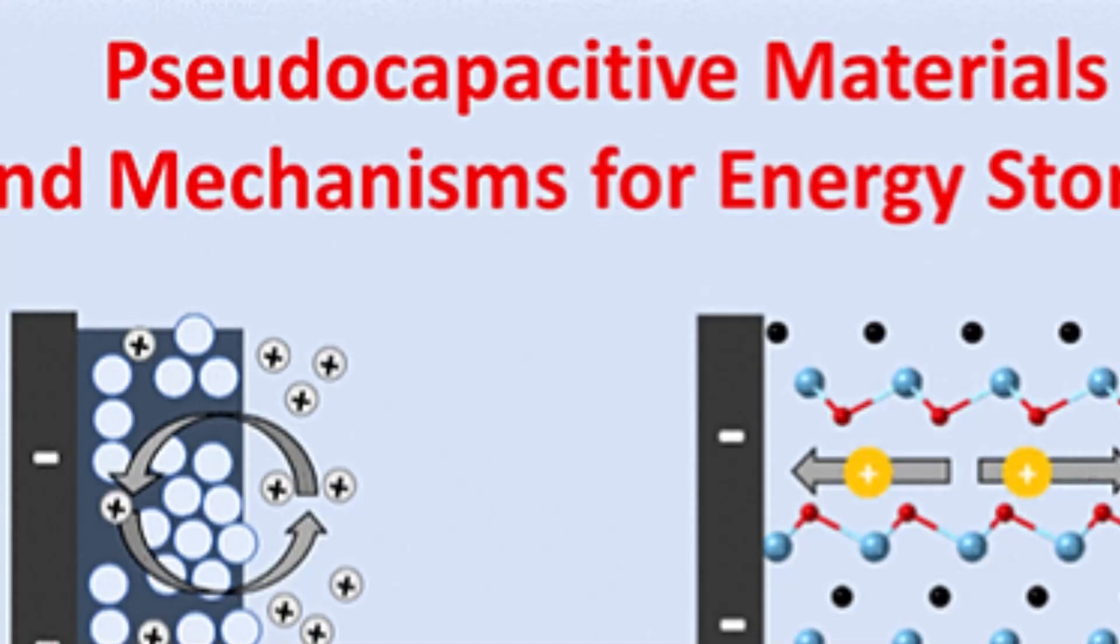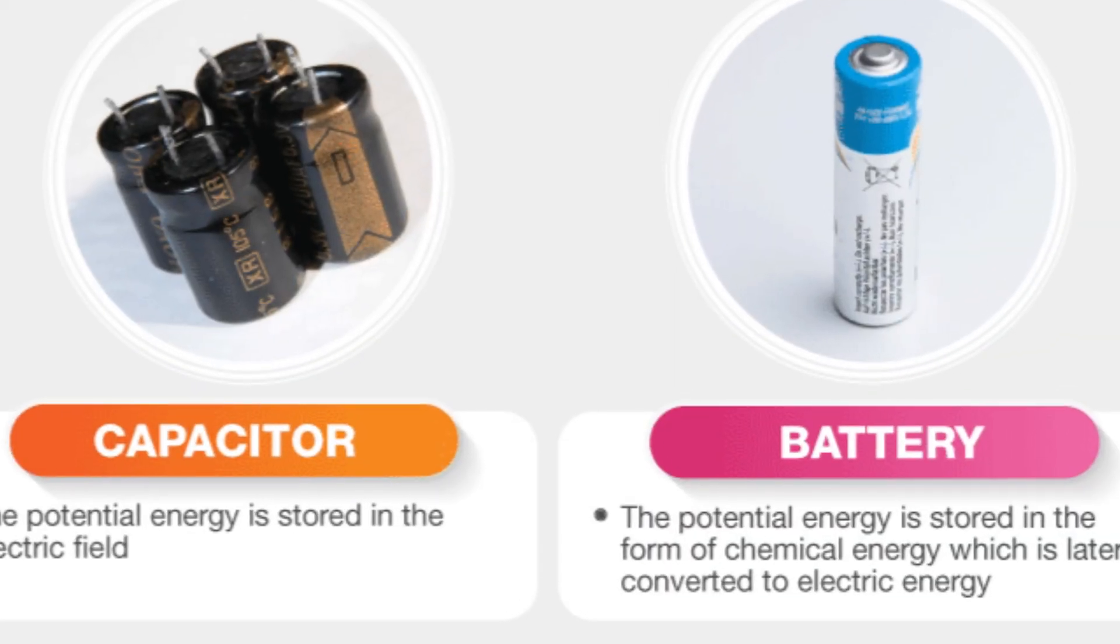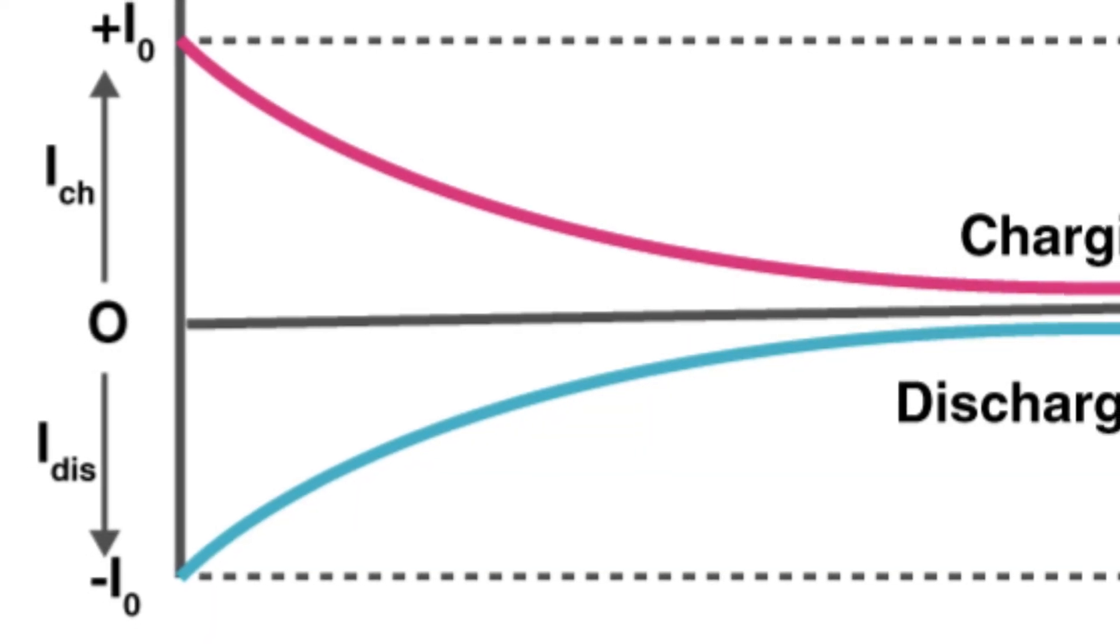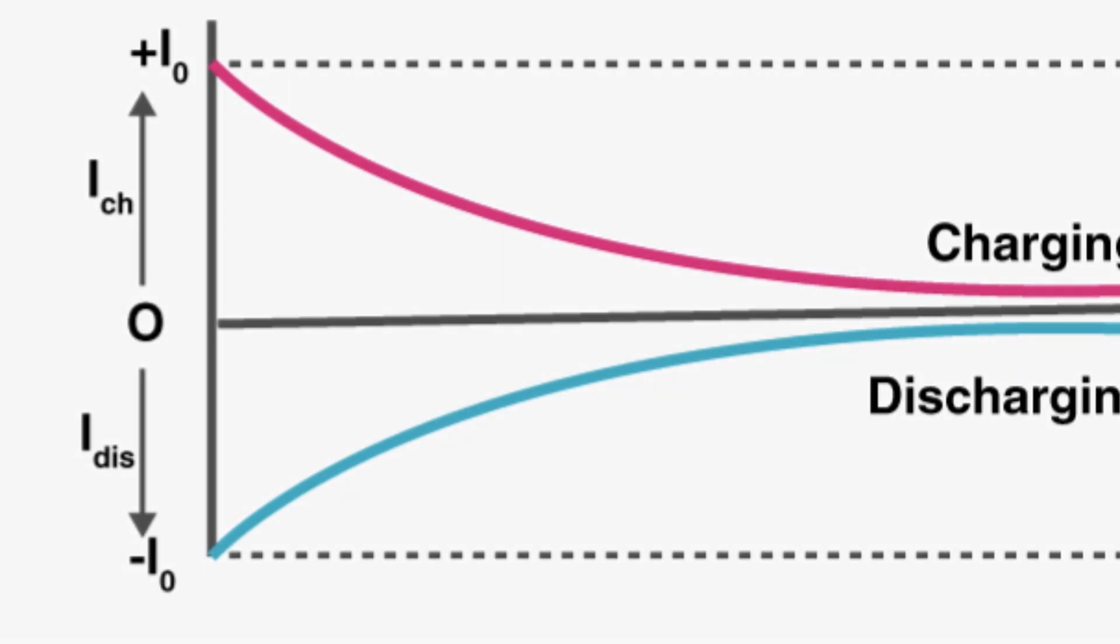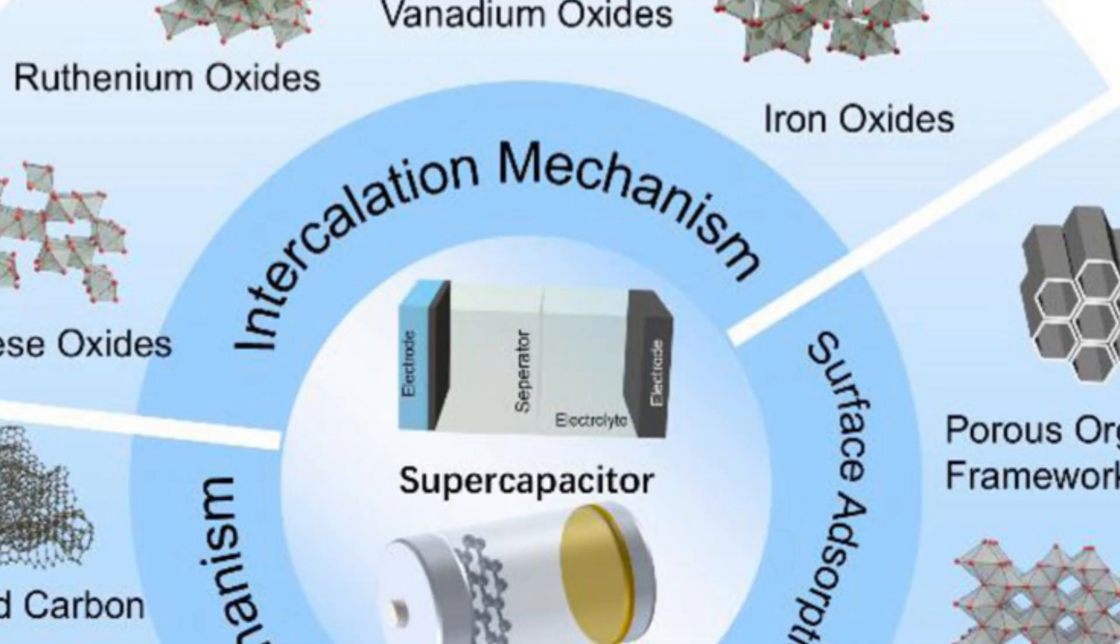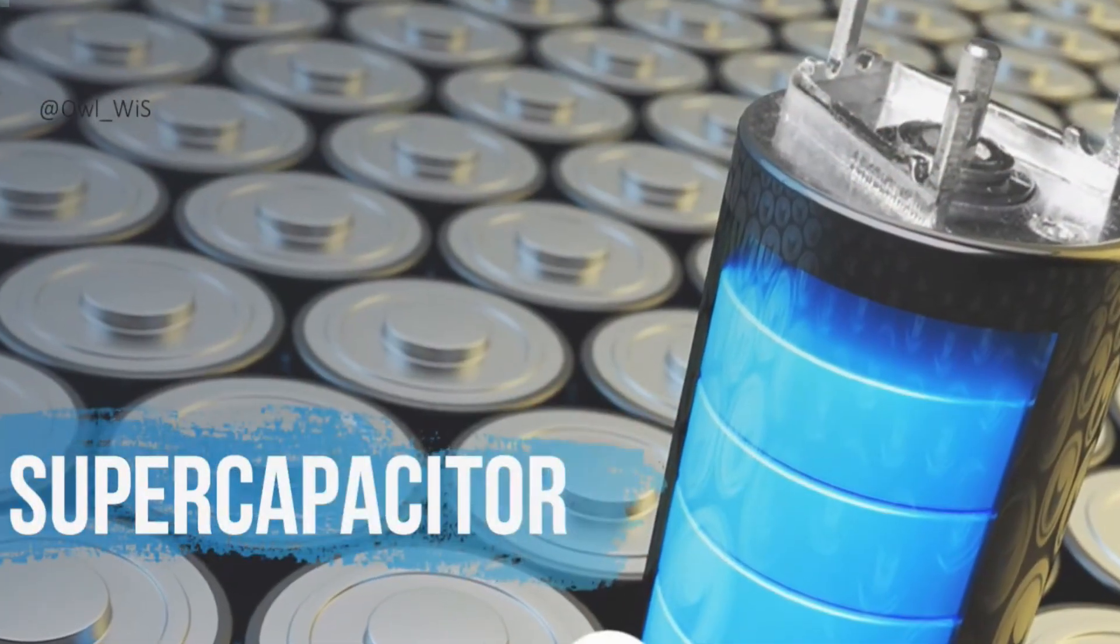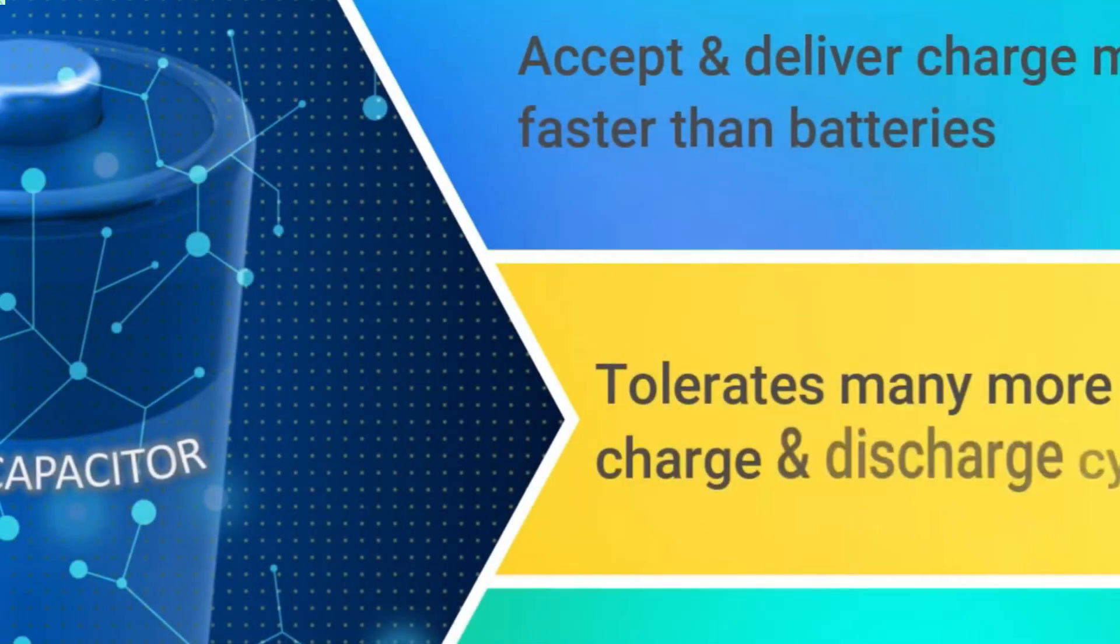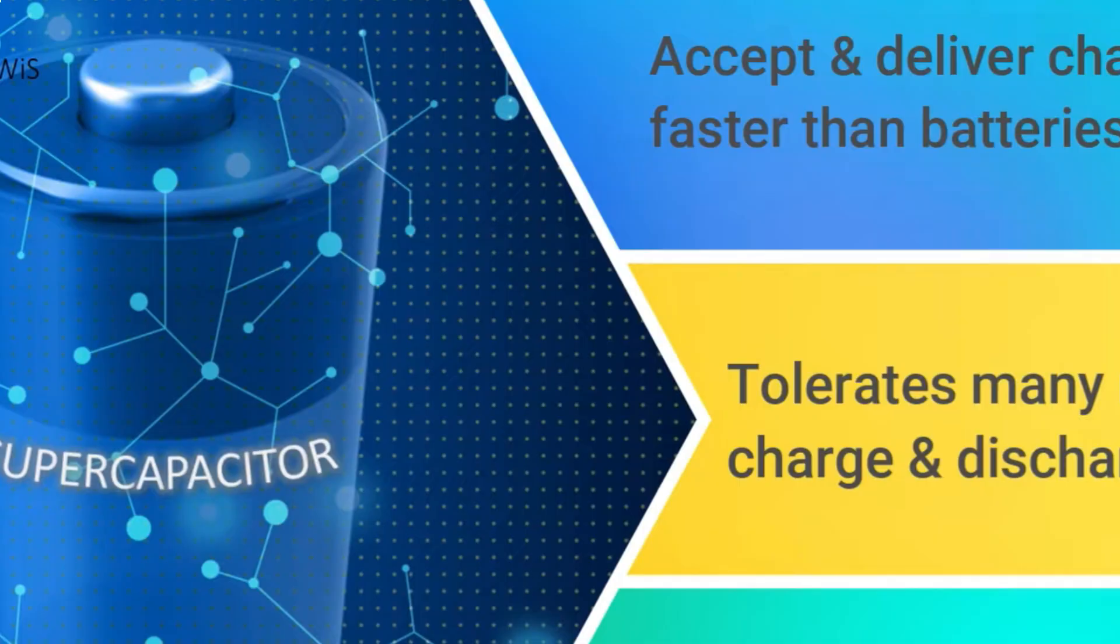There are two common types of energy storage – capacitors and batteries. Capacitors charge and discharge quickly, but they don't hold much energy. Batteries, on the other hand, can store large amounts of energy but take longer to charge. Pseudocapacitive materials, like NDICOF, combine the best of both worlds. They store energy through chemical reactions at the surface, like a battery, but without needing deep penetration into the material. That means fast charging and discharging, with high energy density.